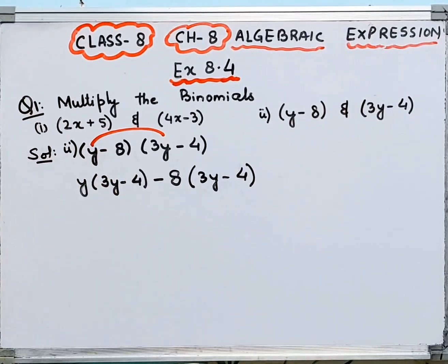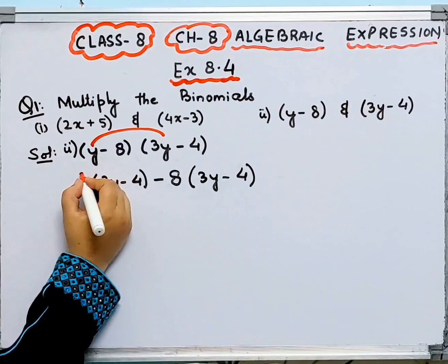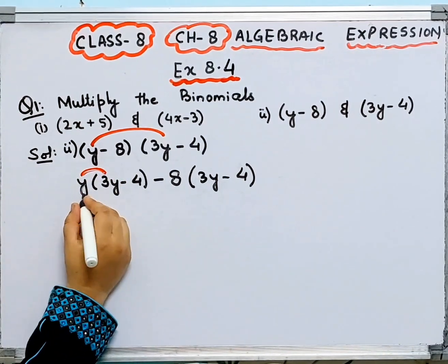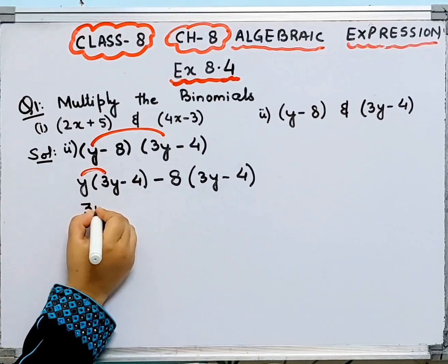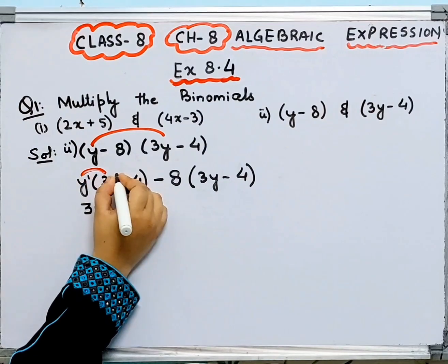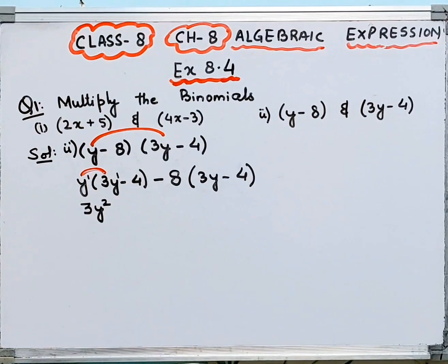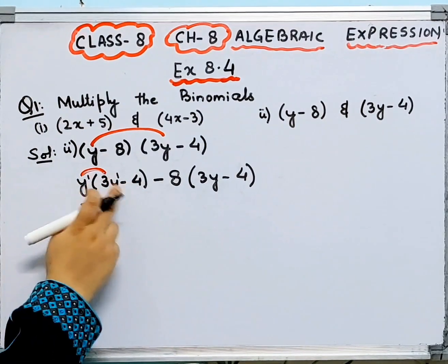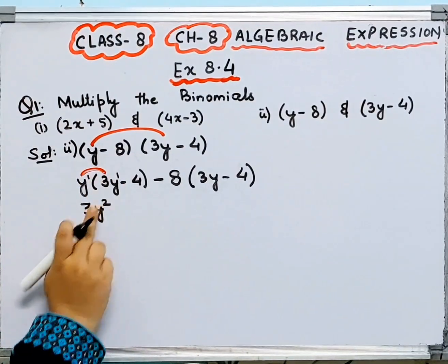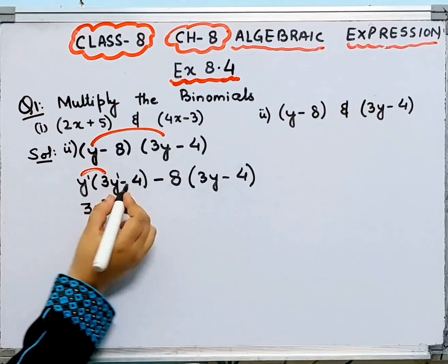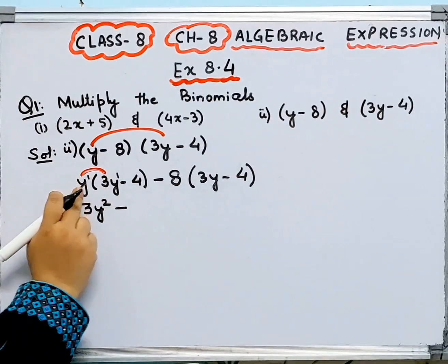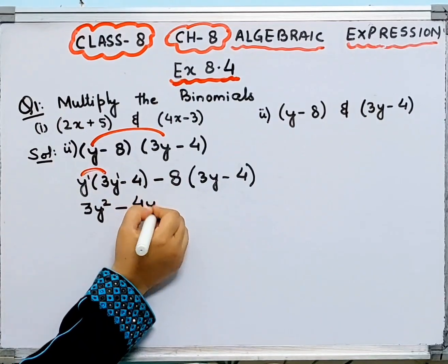You will multiply minus 8 by the whole expression 3y minus 4. So y times 3y: the powers are both 1, 1 plus 1 is 2, giving 3y squared. Then plus times minus is minus, so 4 times y gives minus 4y.